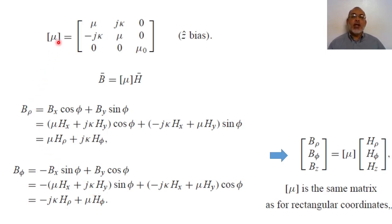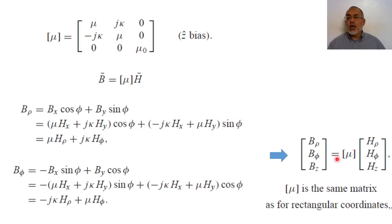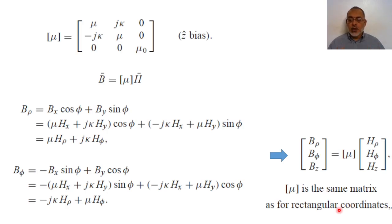Combining these results, the equivalent permeability tensor in cylindrical coordinates is: B_ρ = μH_ρ + jκH_φ, B_φ = −jκH_ρ + μH_φ, B_z = μ₀H_z. Effectively the permeability tensor in cylindrical coordinates is exactly the same matrix form as in Cartesian (rectangular) coordinates. So if we need to find the magnetic flux density from the magnetic field in cylindrical coordinates, we use this same tensor relation.